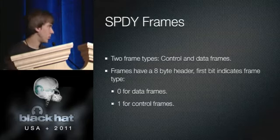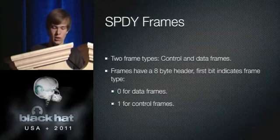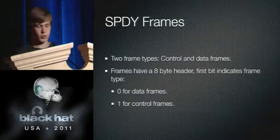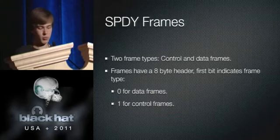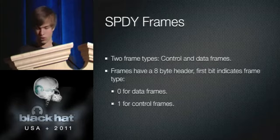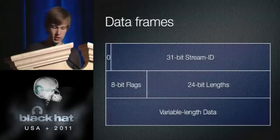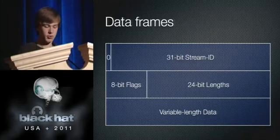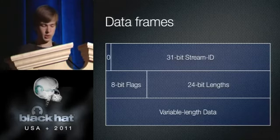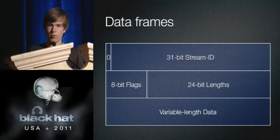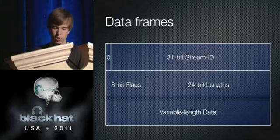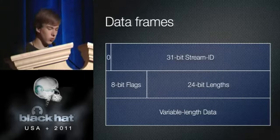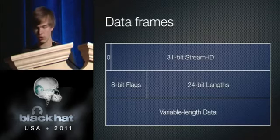There are two different frame types in SPDY: control frames and data frames. Each frame consists of an 8-bit identification header, and the first bit determines the frame type — zero for data frame, one for control frame. A data frame has that zero first bit, then a 31-bit stream ID indicating which data stream this frame belongs to, then 8 bits of flags. Flags can notify the receiver of things like 'this is the last packet I'll send' or 'this data is compressed, please use Gzip to decompress.'